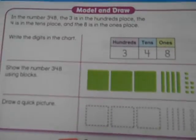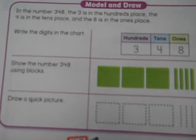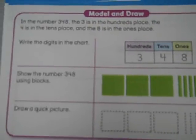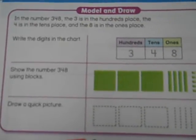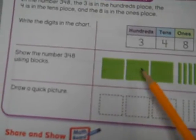Let's look at the model and draw section of the page. In the number 348, the 3 is in the hundreds place, the 4 is in the tens place, and the 8 is in the ones place. Write the digits in the chart. Have your child copy that, please. Now, when we draw it, we're going to use squares for hundreds, straight lines for tens, and single little mini squares for the ones.